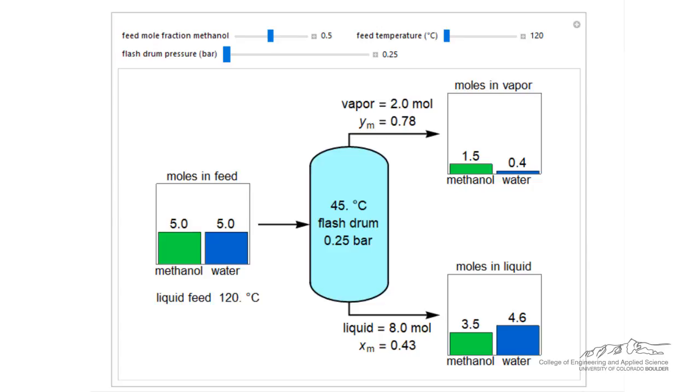First, we will vary the inlet temperature. Recall this simulation is for an adiabatic flash unit. As the feed temperature is increased, the enthalpy of the feed is increased and more of the feed goes to the vapor phase.